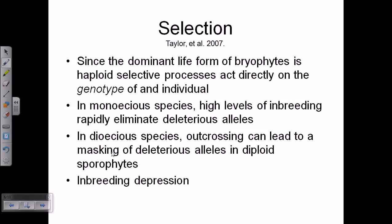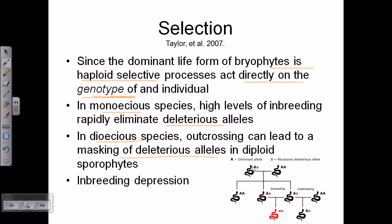Looking at how natural selection governs bryophyte evolution: since the dominant life form of bryophytes is haploid — that is, the dominant life form is the gametophyte, which is haploid — the selective process acts directly on the genotype. Anything that affects the moss phylogeny directly changes the gametophyte and thus directly changes its genotype. In monoecious species, inbreeding rapidly eliminates deleterious alleles, while in dioecious species, outcrossing can lead to masking of deleterious alleles in diploid sporophytes.